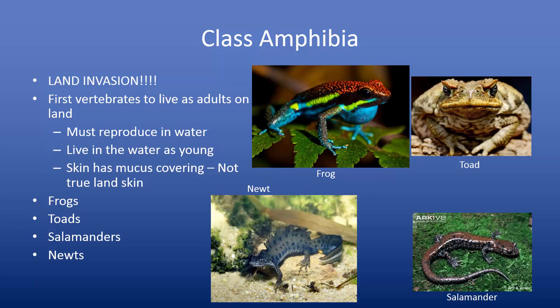The eggs hatch in the water and they live in the water as young. The most classic example would be a frog and a tadpole. They hatch, go into the water, and extract oxygen from the water. They develop over time into an adult frog, which can then live for a time on land.